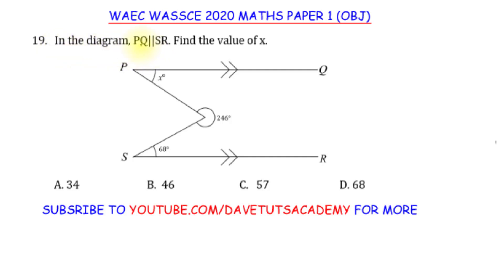In the diagram, line PQ is parallel to line SR, so this is PQ and this is SR and we are told that they are parallel. That is what these double arrows are also indicating. You can see the same double arrow on PQ is also on SR, that is telling us that these two lines are parallel, meaning that they can never meet at any point. But we have to find the value of X in this particular location.